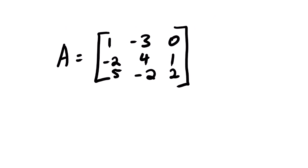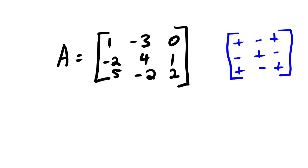Suppose we have matrix A and we want to determine the determinant of matrix A using the Cofactor Method. What is important: we need to keep this little sign table in mind. We are going to use it to determine the determinant using the Cofactor Method. We have a choice to choose between row number one, two, and three. That is the first step — we need to choose a row. Suppose we are going to use row number one.